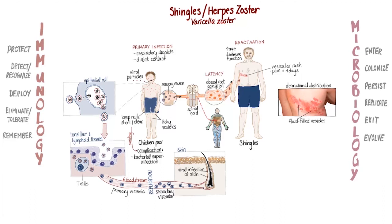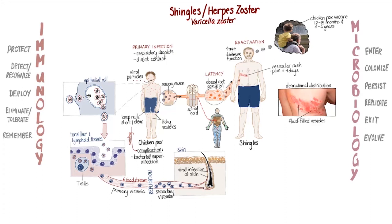Like chicken pox, shingles is a highly contagious condition, and Noah was at first very worried about potentially infecting his grandson. His physician reassured him that if Joshua's immunizations were up to date, he would have received the varicella vaccine around one year of age and would therefore be protected. Vaccines against shingles are also routinely recommended in many countries for adults over 60 years of age, as their immune systems may begin to weaken, making a reactivation more likely.